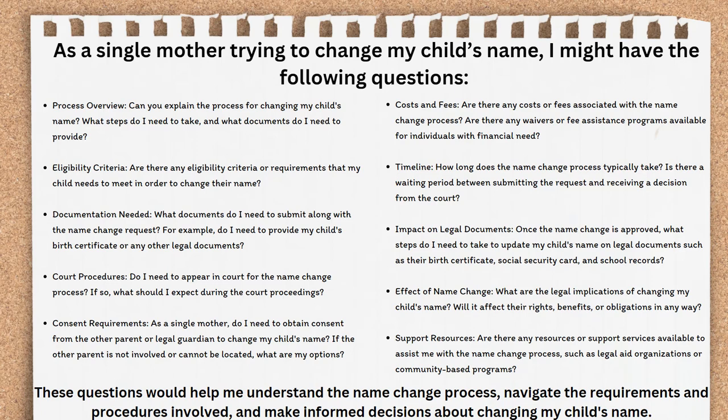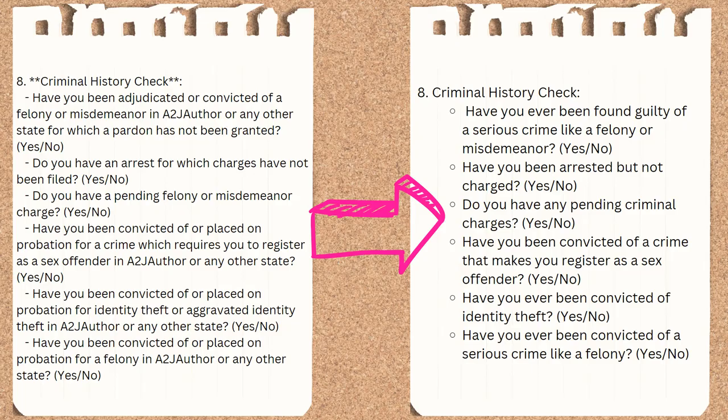I'd go through and do this for each of my user personas, even applying follow-up prompts if I wanted to get additional questions or problems that this type of user might have. Now that I've got my storyboard and the follow-up checklist, I want to give my plan text a plain language review. The AI can help with that too. I took that same list of questions produced from the copy and paste of the form into the prompt and asked ChatGPT to make it more plain language.